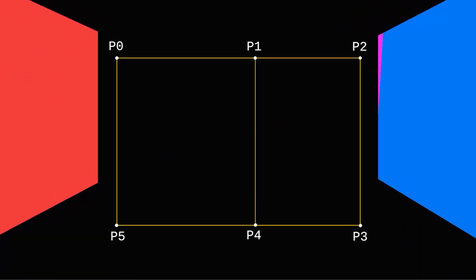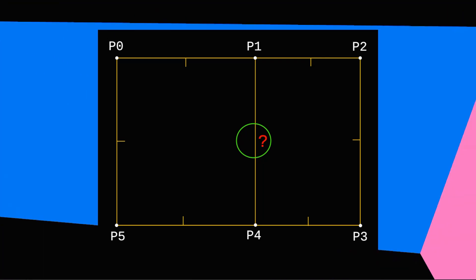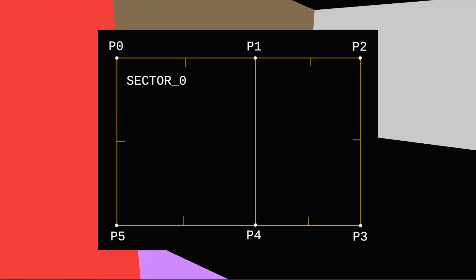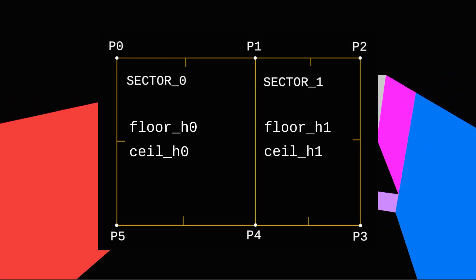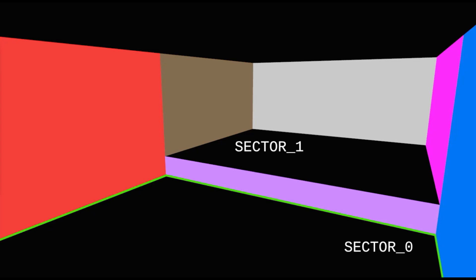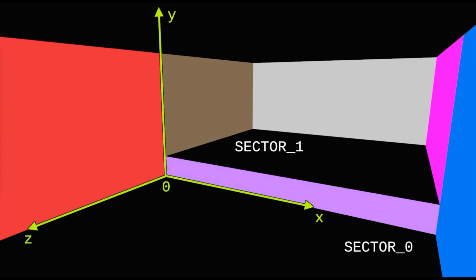Consider a room with a transition in floor height that forms a step. To define the geometry of this room we need to set six points and choose the direction of segments so that their normals — the front sides — look inside the room. For the segment that divides the room in height, we use an approach similar to Doom: we introduce the concept of a sector. A sector is a certain closed area of segments in which the heights of floors and ceilings are defined.